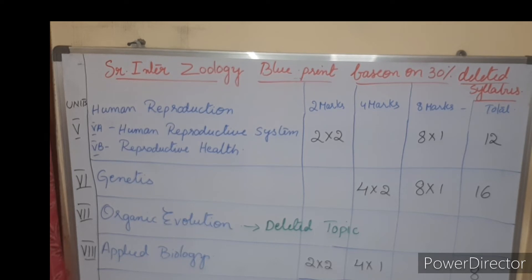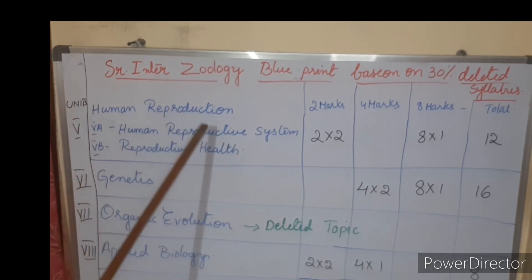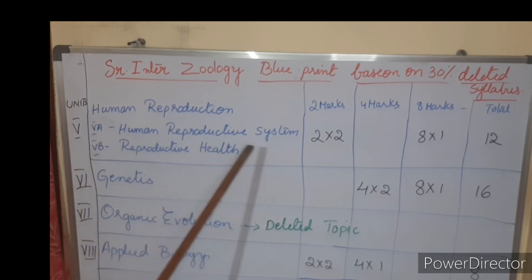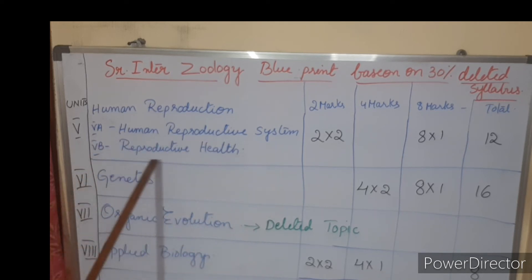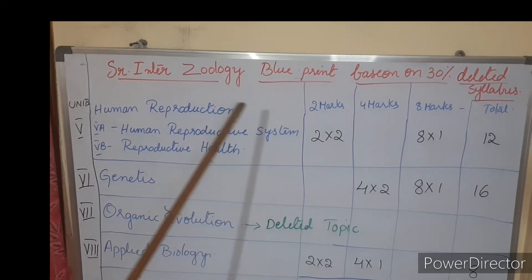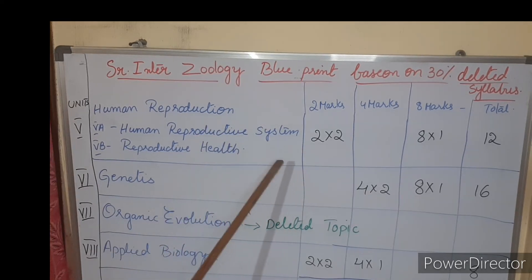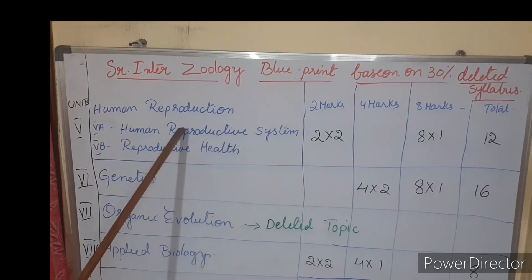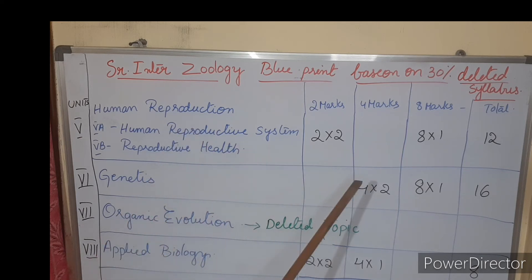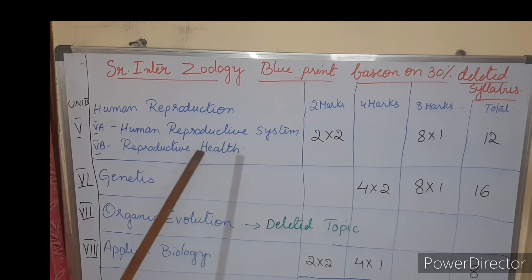Unit 5 is Human Reproduction. In that, 5A is the Human Reproductive System and 5B is Reproductive Health. From these two chapters we may get two two-mark questions — from either 5A or 5B — and one eight-mark question. Total marks from this unit are 12 marks.